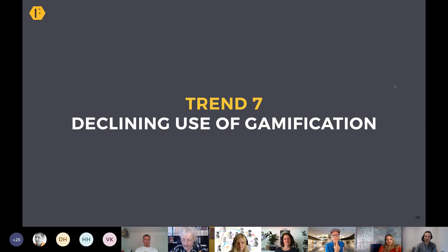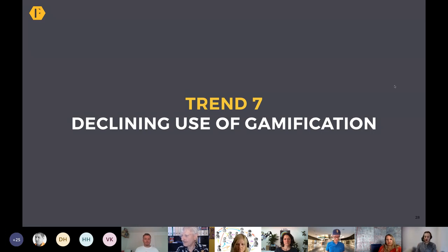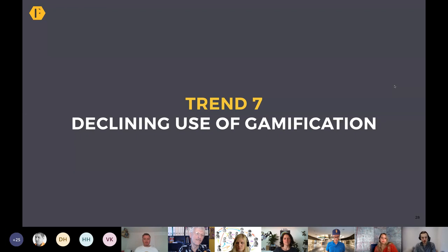Trend number seven: we're seeing a declining use of gamification. Gamification was all the rage maybe five to seven years ago, but in terms of its ability to influence behavior, it's less and less important than it used to be. Instead, things like access and status — but the more implicit sense of status — matter more. It's not earning a badge for asking 10 questions, but those more subtle signs of status are more important.